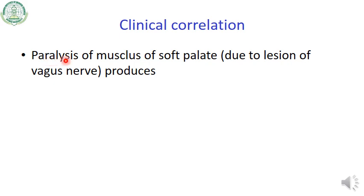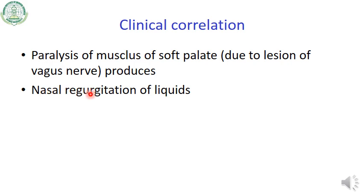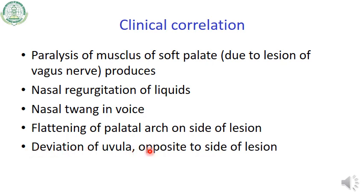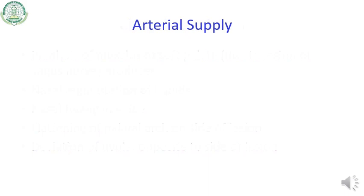Coming to the clinical correlation in relation to the muscles of the soft palate: paralysis of the muscles of the soft palate due to a lesion of the vagus nerve produces nasal regurgitation of liquids, a nasal twang in voice, flattening of the palatal arch on the side of the lesion, and deviation of the uvula to the opposite side of the lesion.